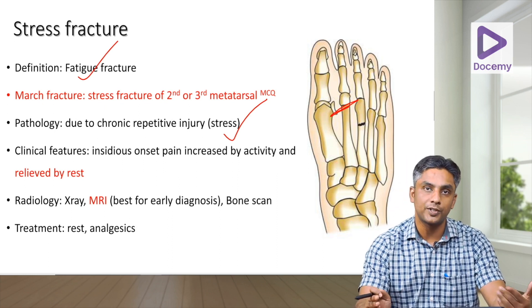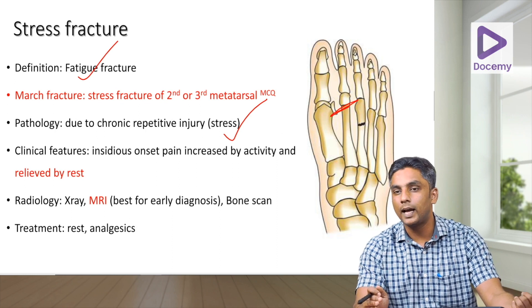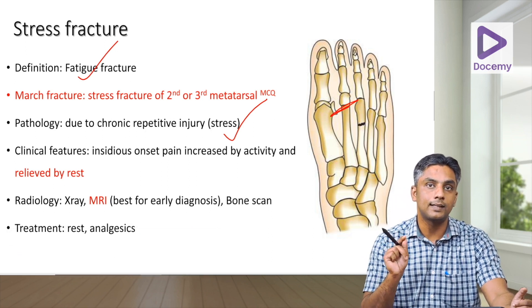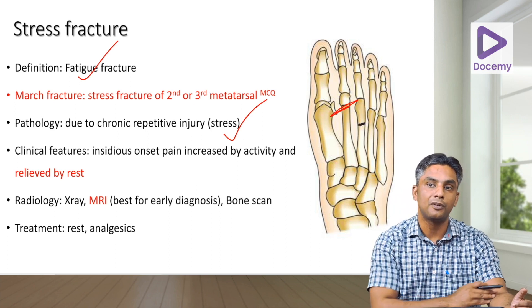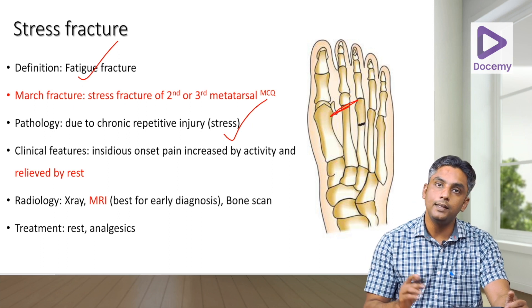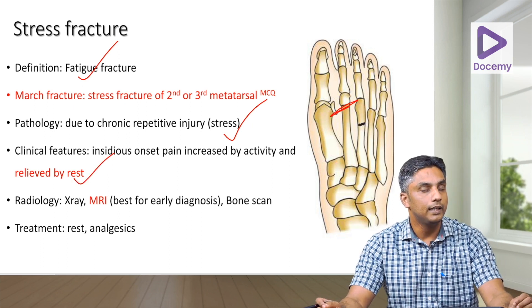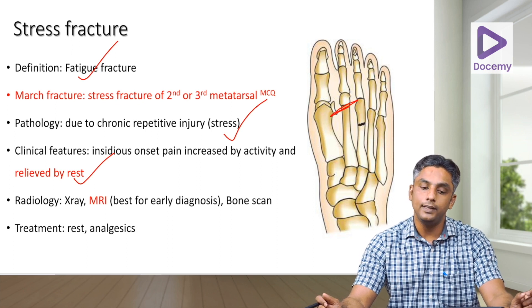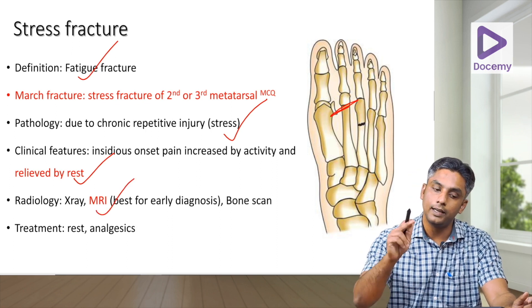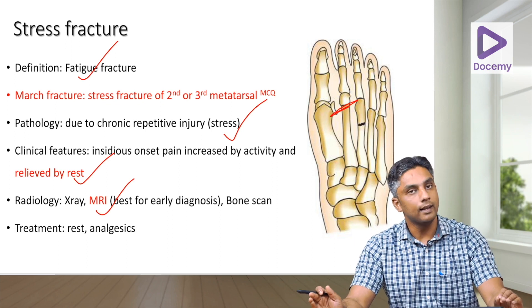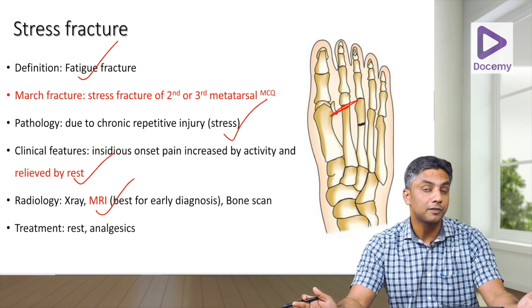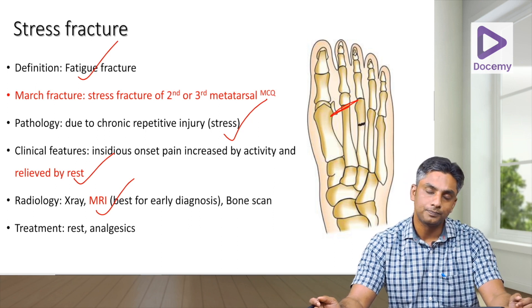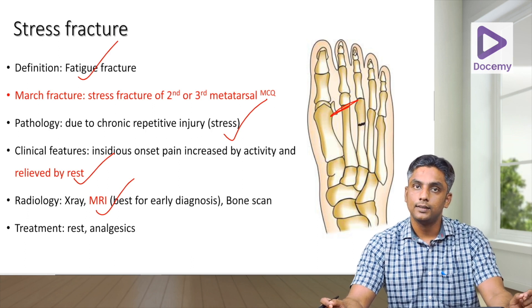Clinically, the patient presents with insidious onset pain — a nagging pain during exertional activities that is relieved by rest. Relief by rest is the classical clinical feature of a stress fracture. Radiologically, x-rays, MRI, or bone scans are used, and MRI is the best for early diagnosis. Treatment involves rest and unloading the offending part — stopping weight-bearing, running, or walking, and using modified footwear with symptomatic analgesia.